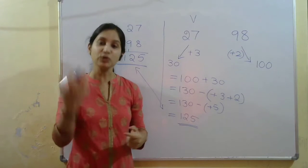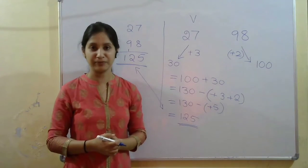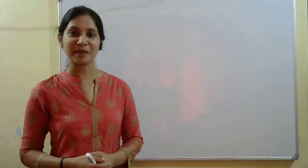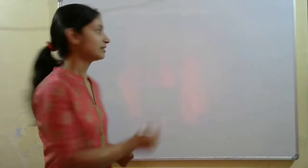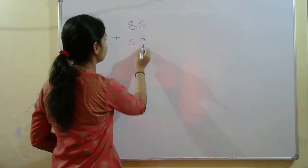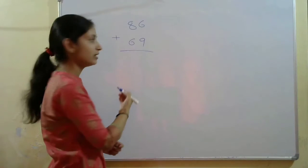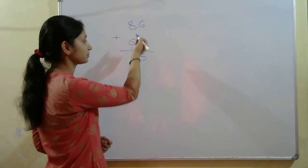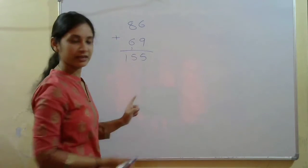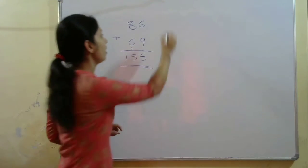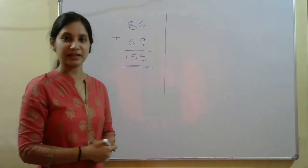Even though it seems like more steps, if you do it mentally and get used to it, it will be very helpful in competitive exams, or you can use it to cross-check work done by the conventional method. Let us solve two more examples. The next example is 86 plus 69. Using the conventional method, we get 155.